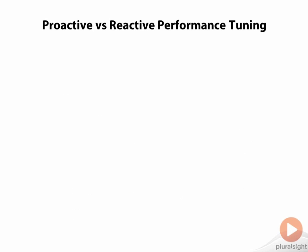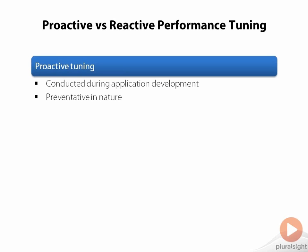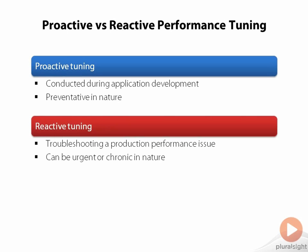Everything we have talked about so far in terms of performance tuning and testing has been with regards to proactive performance tuning. Unfortunately, no matter how thorough our testing, there are times when performance issues occur in a running production application and you're going to need to troubleshoot and fix them. This is what we would call reactive performance tuning. We would like to avoid these situations as much as possible, but it does happen.